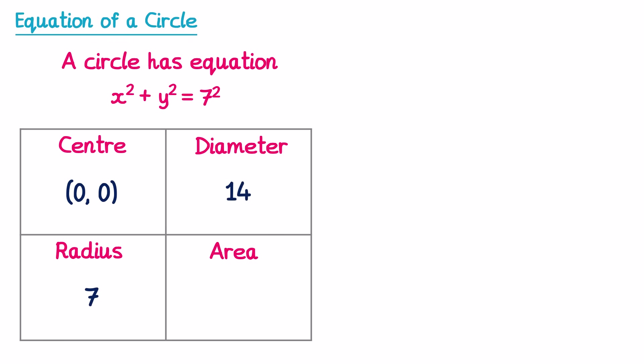We can also work out the area of this circle. The area of a circle is π times the radius squared, so π multiplied by 7². Since 7² = 49, we get 49π.